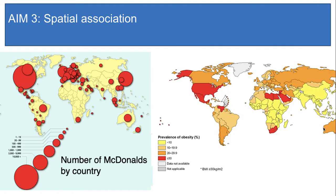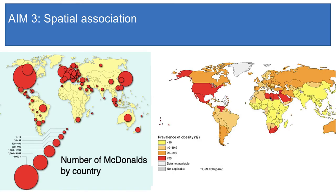Remember in this map, the darker the red, the higher the percentage of obesity. I do see spatial association in some places, like the U.S. — the U.S. has many McDonald's and it has a high rate of obesity. But I also see many countries with no spatial association or very little, like France and Brazil. These countries have lots of McDonald's but low levels of obesity. Then there's countries like Algeria — Algeria has no McDonald's but it does have high obesity. So I would say that the two variables — the number of McDonald's and the prevalence of obesity — have low spatial association and are not highly correlated.